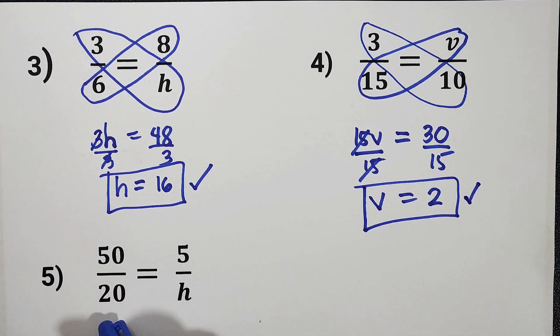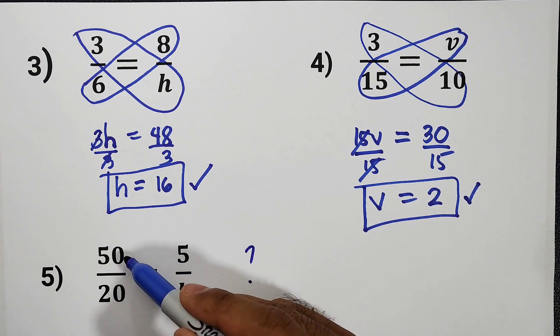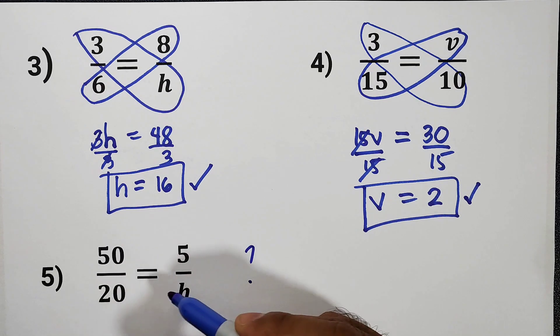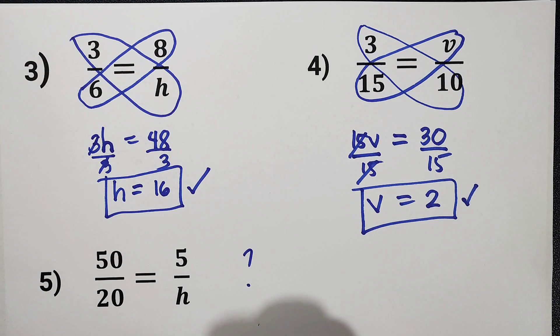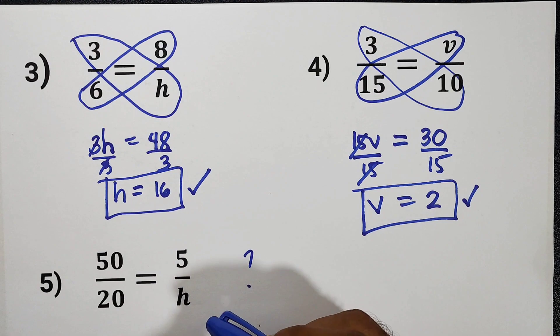Now, for item number 5, I want you to try this and comment your answer in the comment section below. So what is 50 to 20 equals 5 to H? Please like and share our video, and subscribe to our channel. And hit the notification bell so you are updated on our videos.